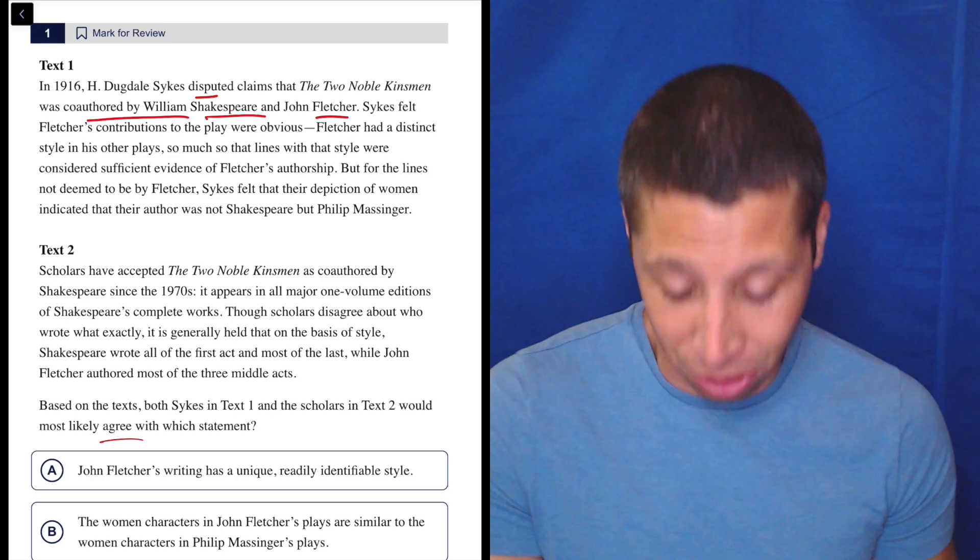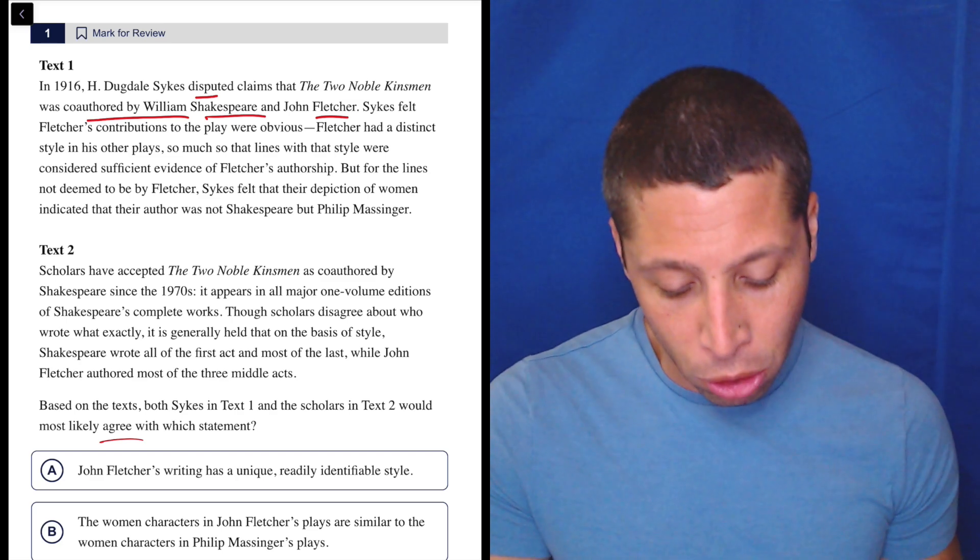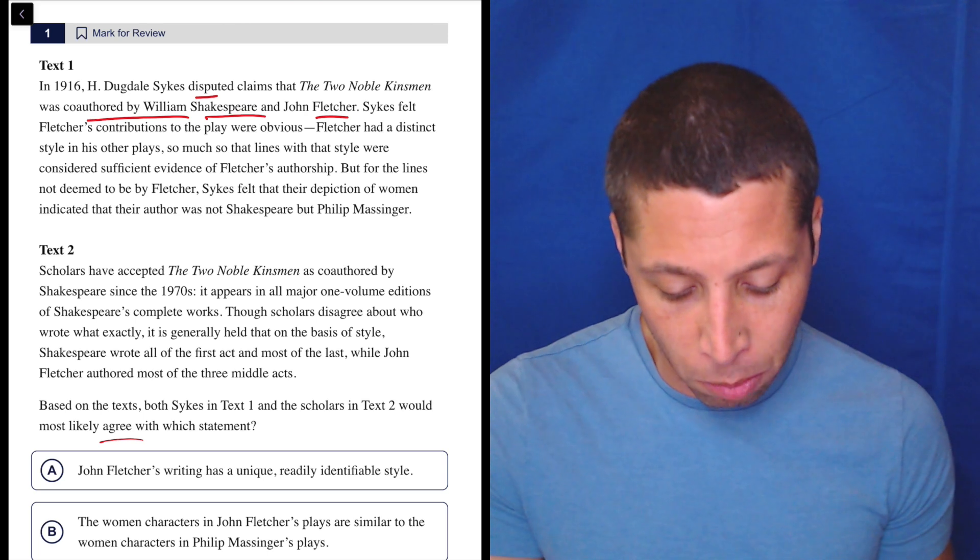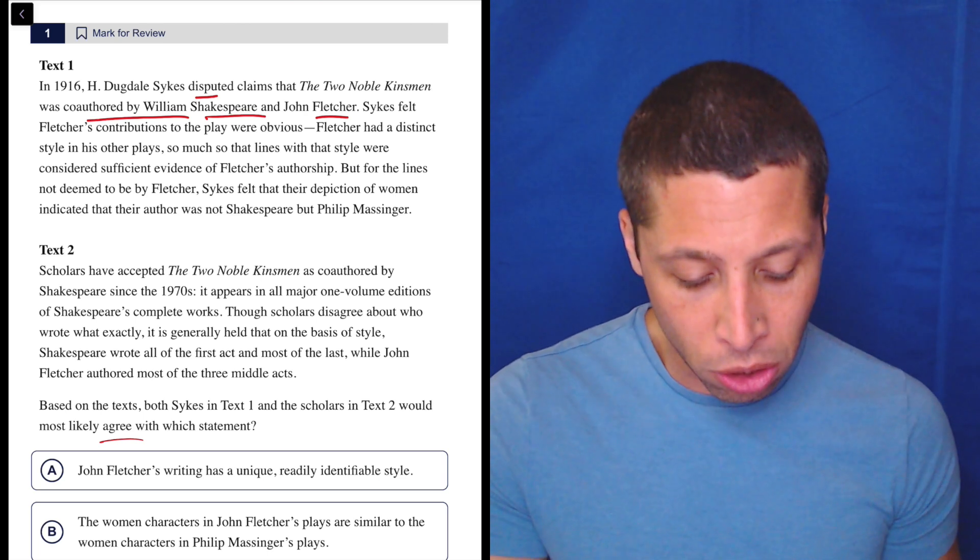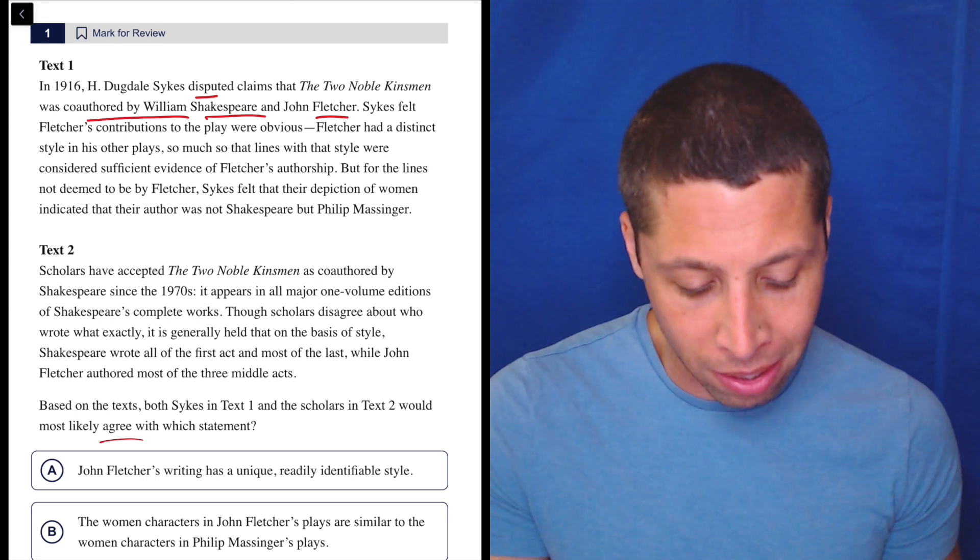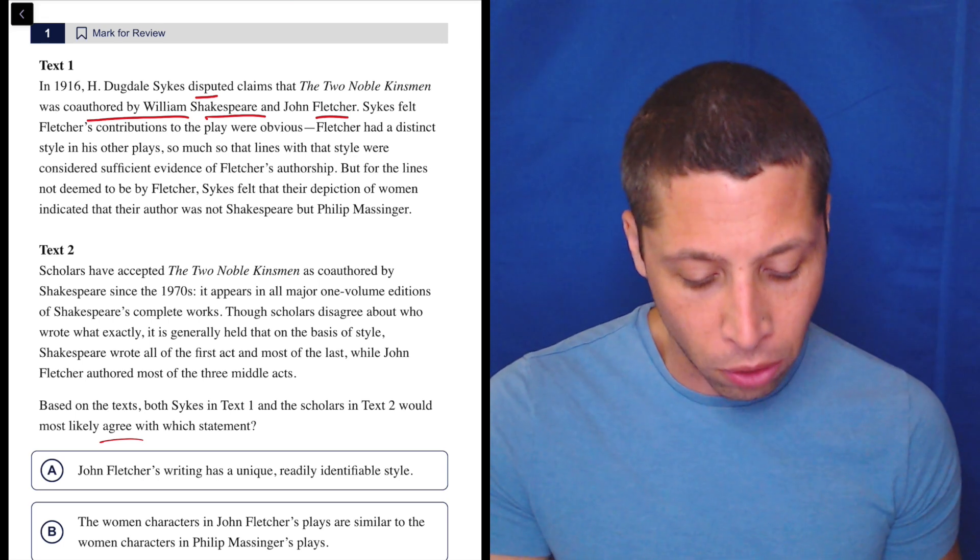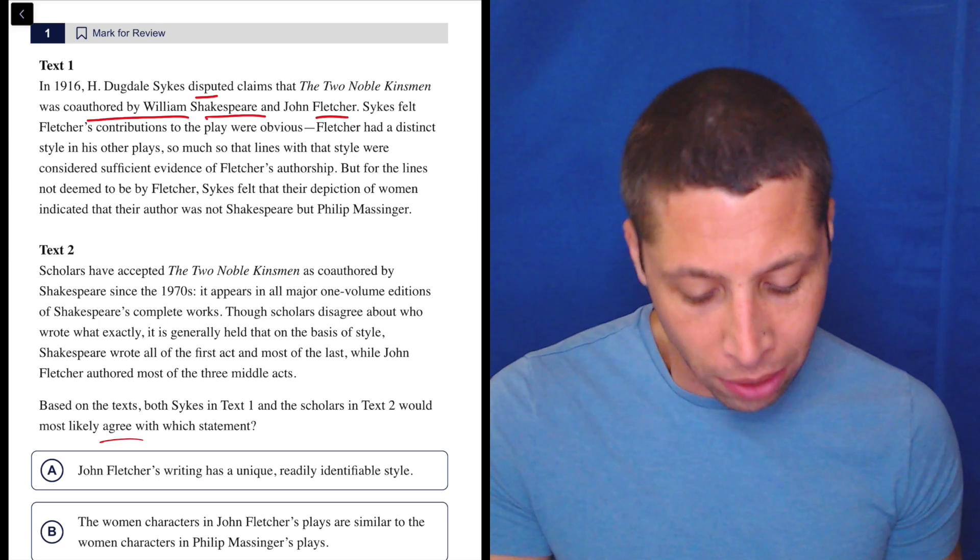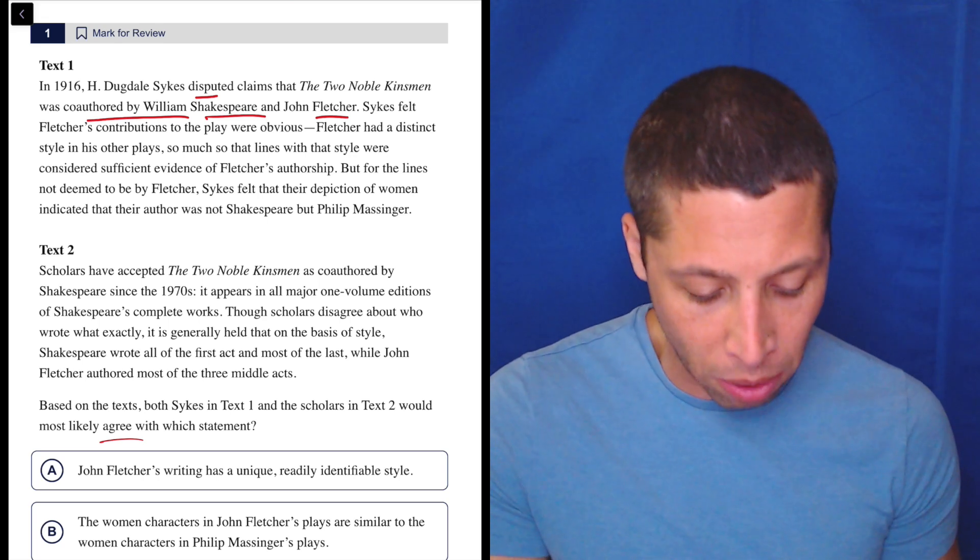Scholars have accepted The Two Noble Kinsmen as co-authored by Shakespeare since the 1970s. It appears in all major one-volume editions of Shakespeare's complete works. Though scholars disagree about who wrote what exactly, it is generally held that on the basis of style, Shakespeare wrote all of the first act and most of the last, while John Fletcher co-authored most of the three middle acts.